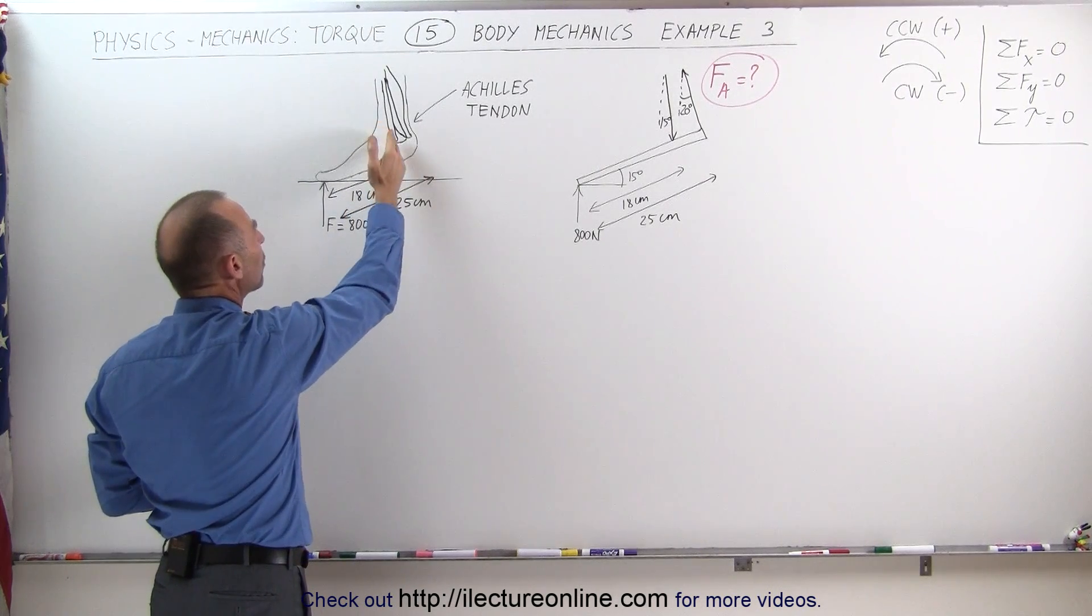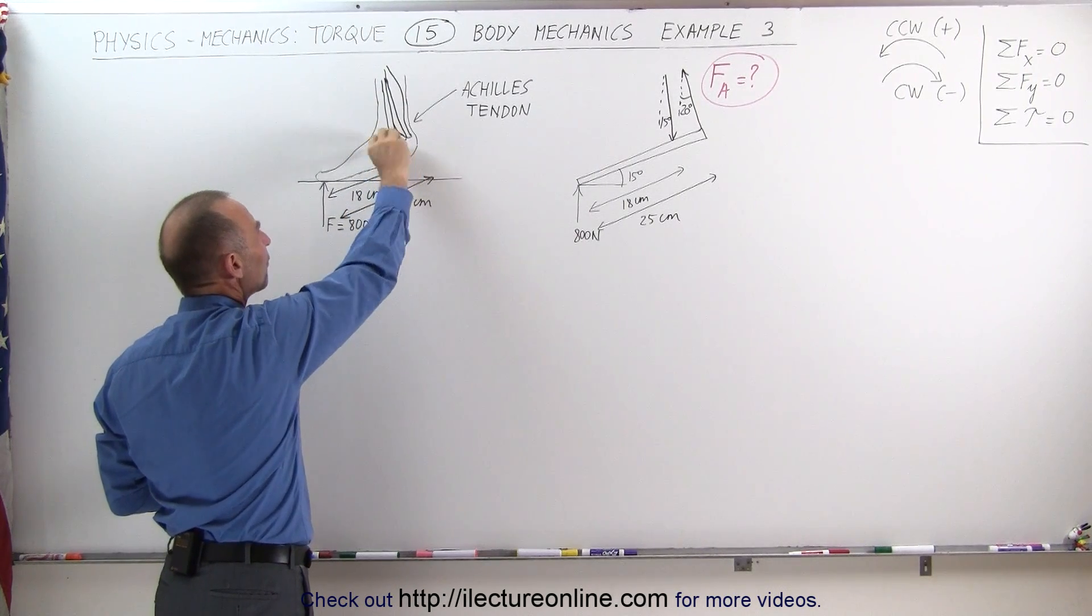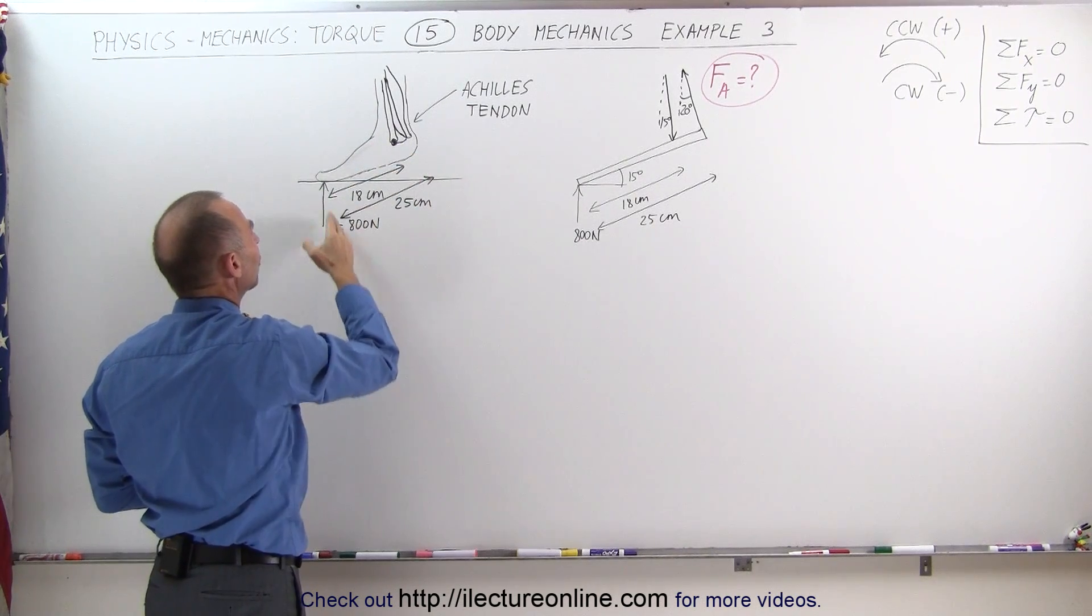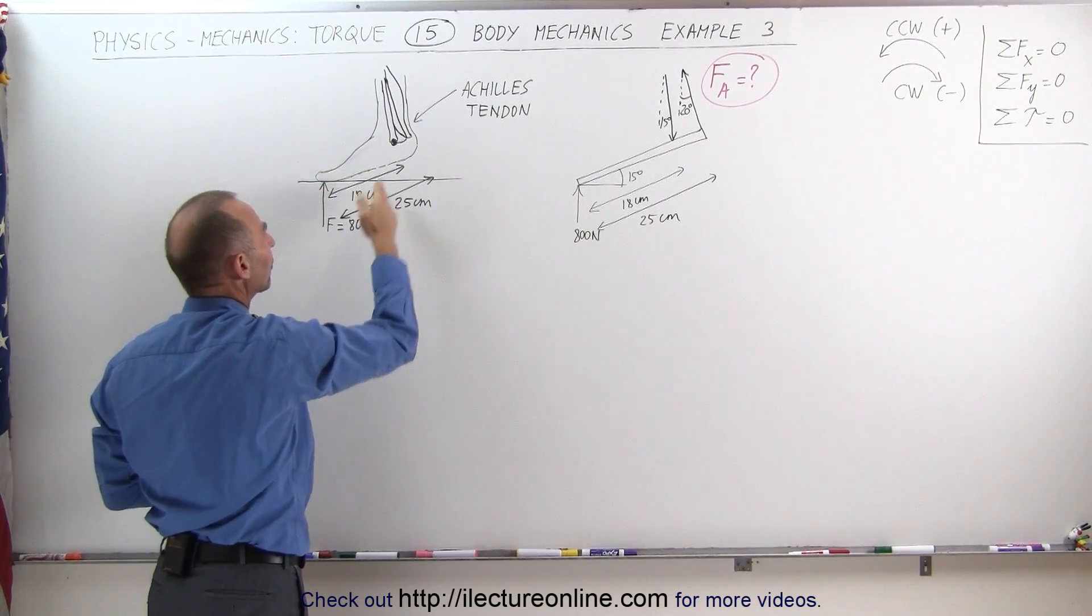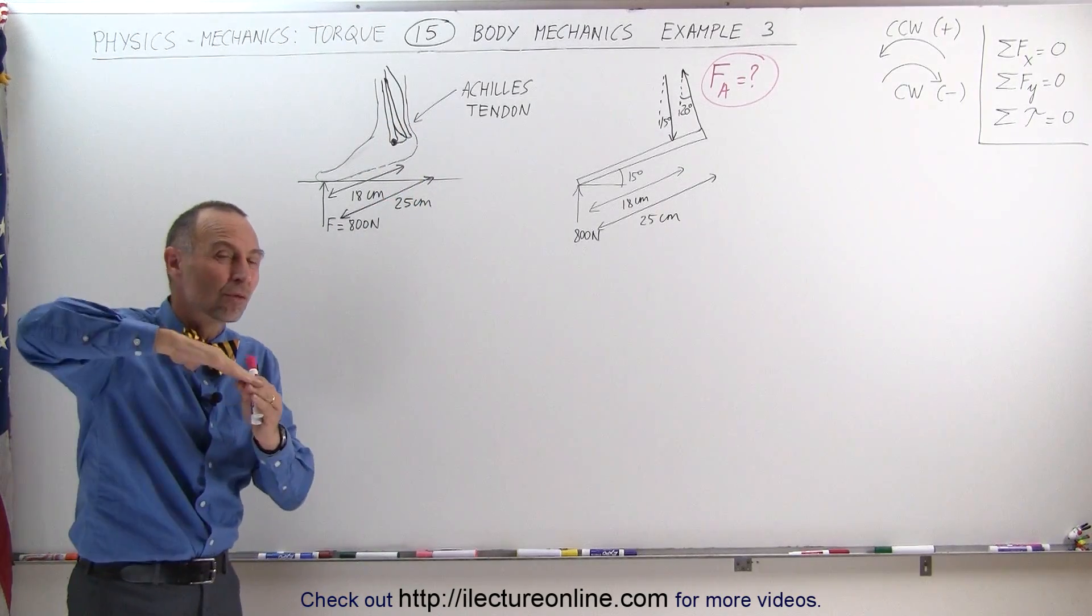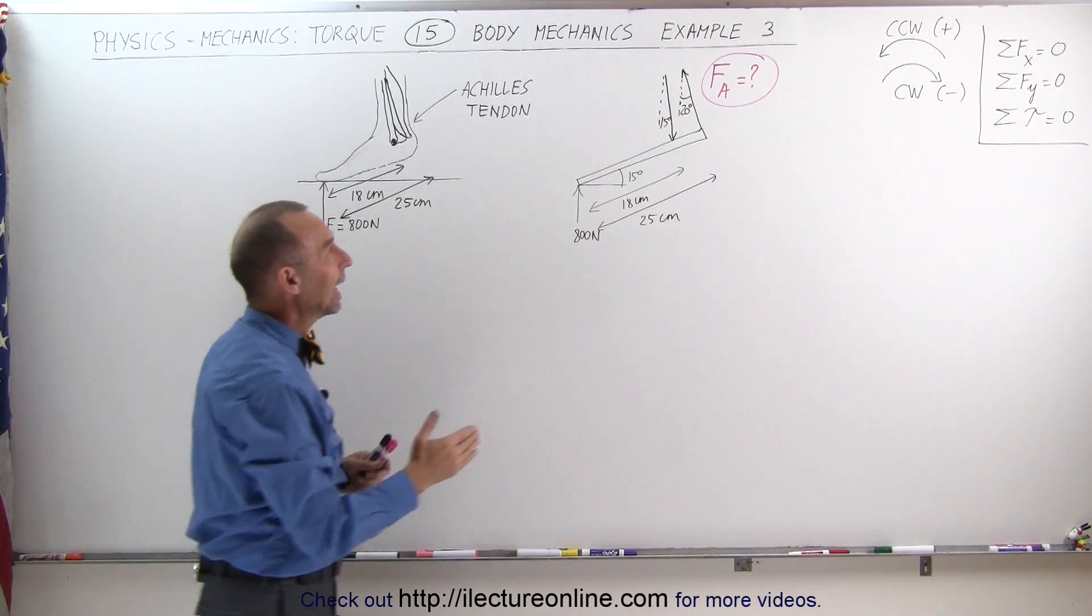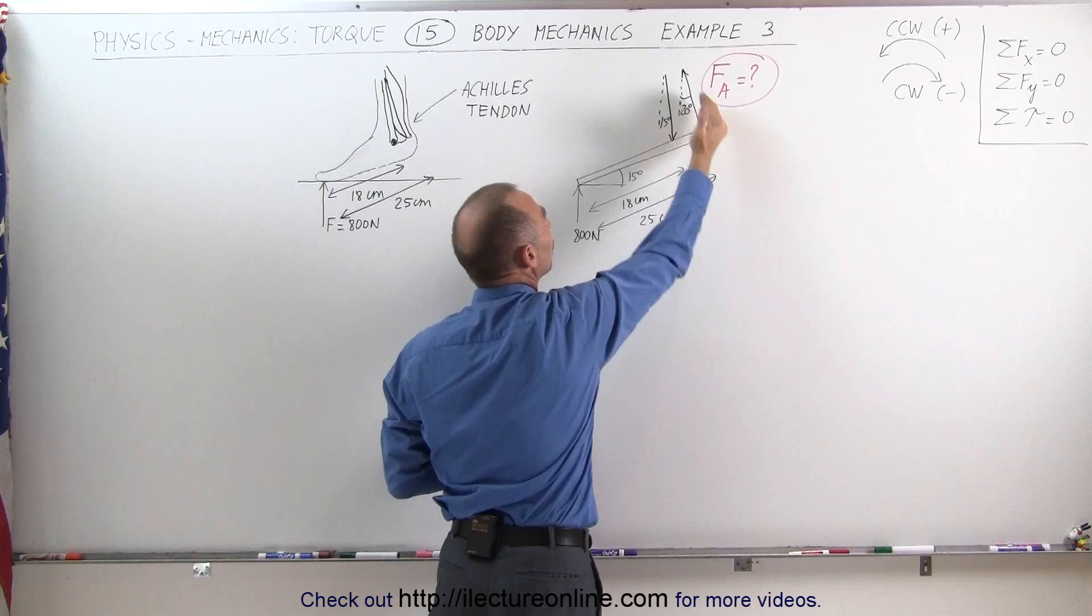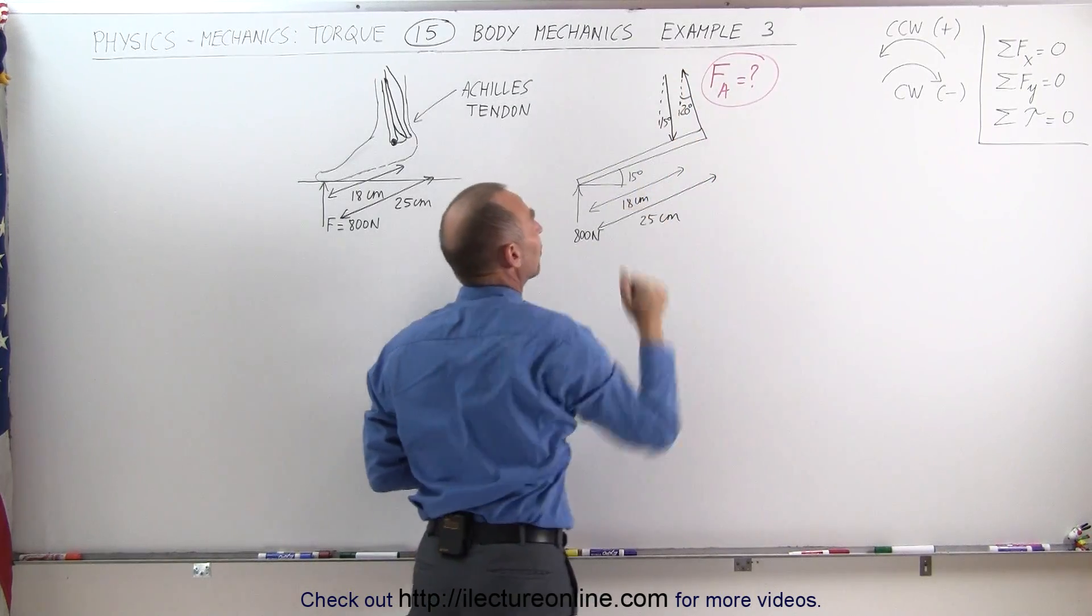The distance from where the bone attaches to the pivot point in the back of your foot to your toes is 18 centimeters, the distance from where your toes touch the ground to where your Achilles tendon is attached to the bone in the back is 25 centimeters. Let's say your toes elevated at 15 degrees and the Achilles tendon makes an angle of 20 degrees with the vertical as it's wrapped around the bone and is attached to your calf.